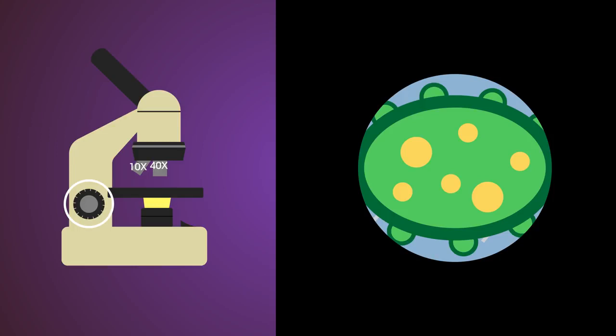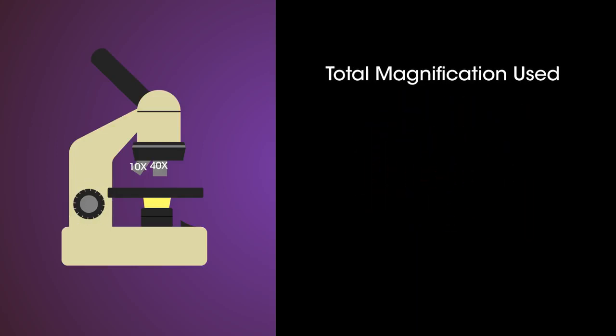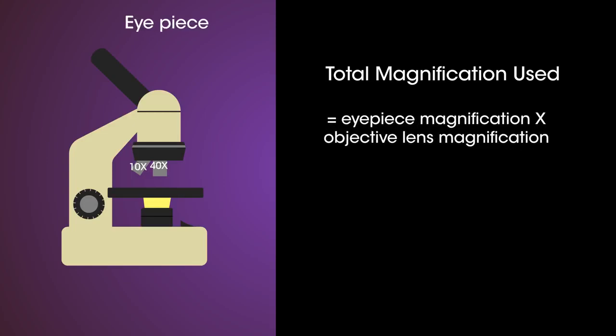Now you can clearly see the specimen, you can draw it and write down the total magnification you used. This is calculated by multiplying the magnification of the eyepiece lens, which is normally times 10, by the magnification of the objective lens.